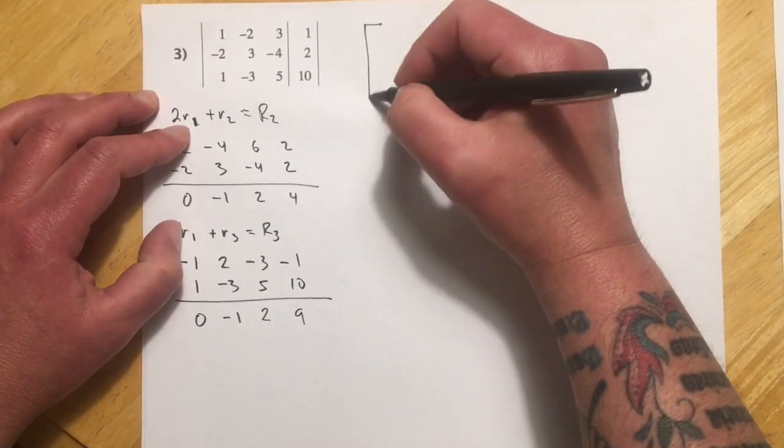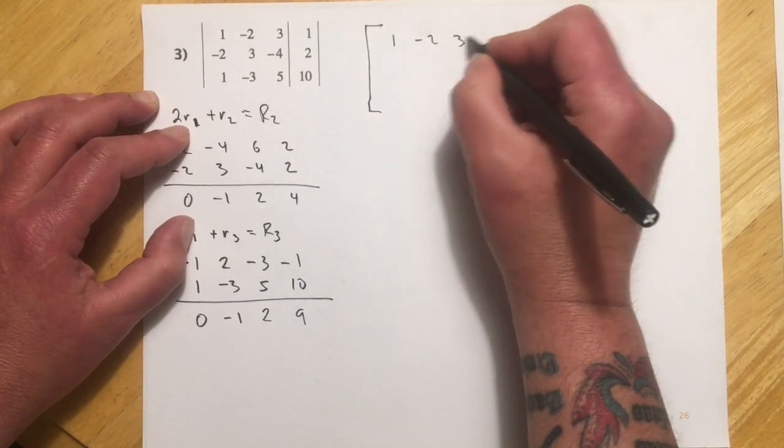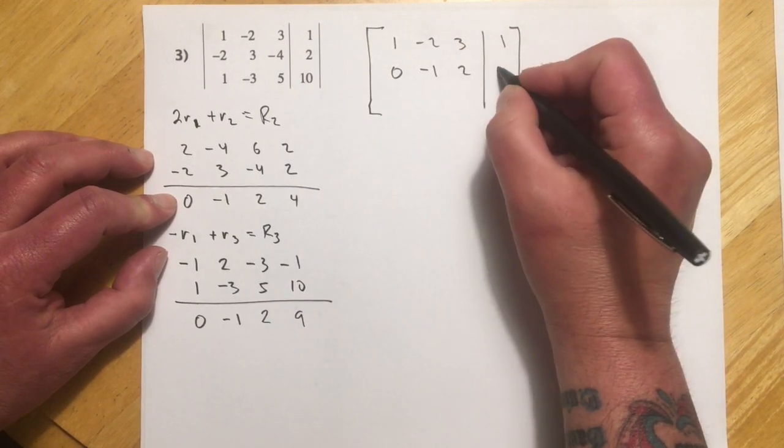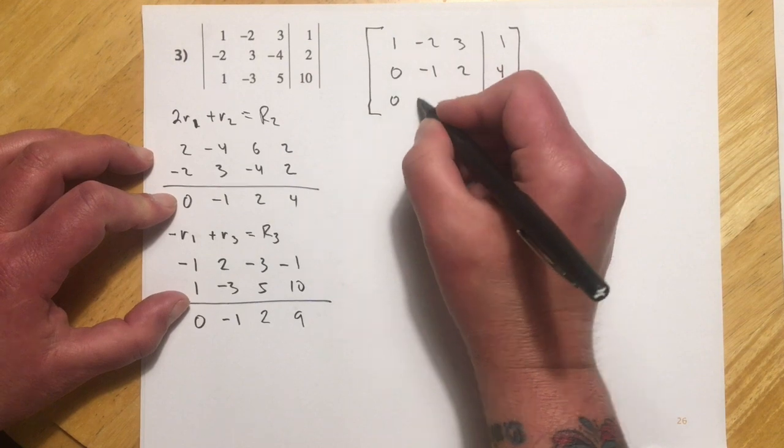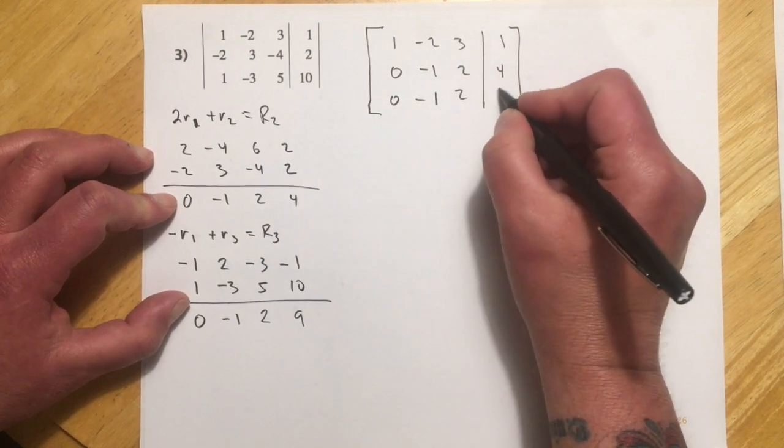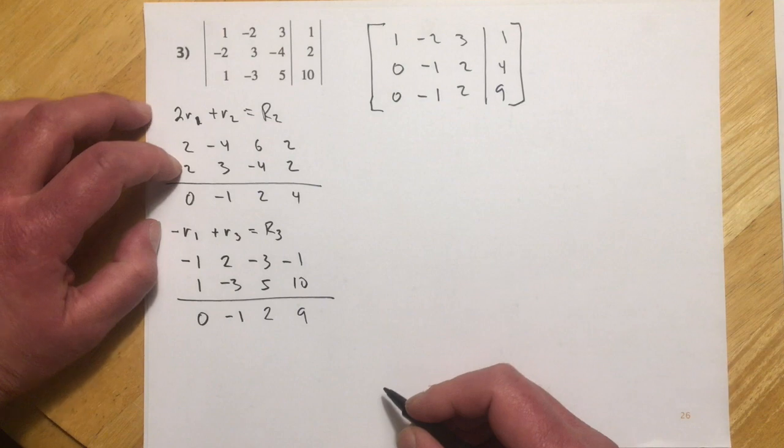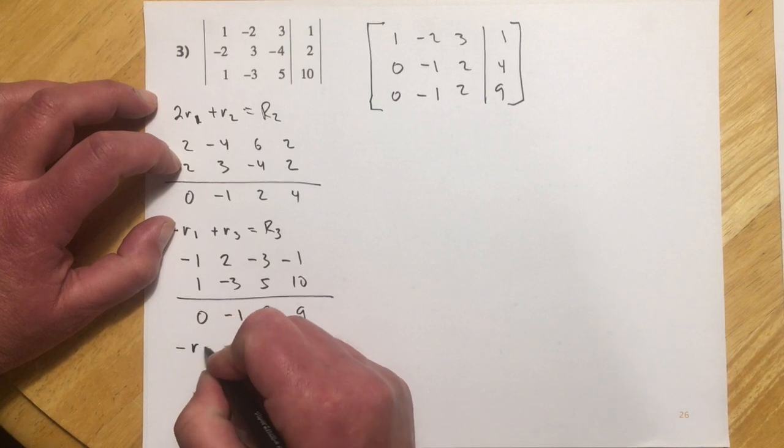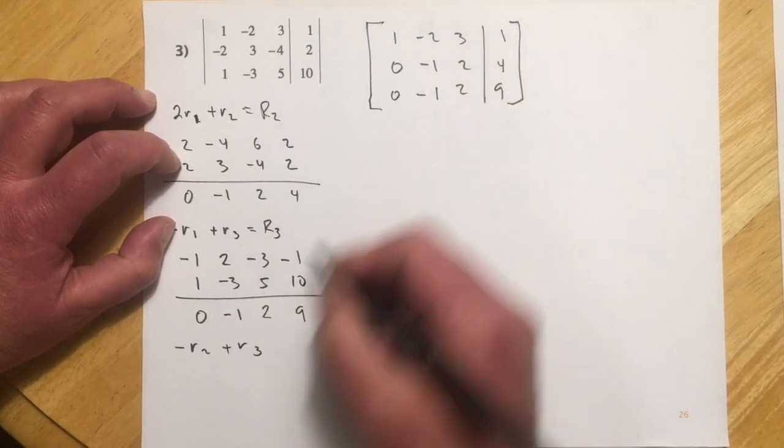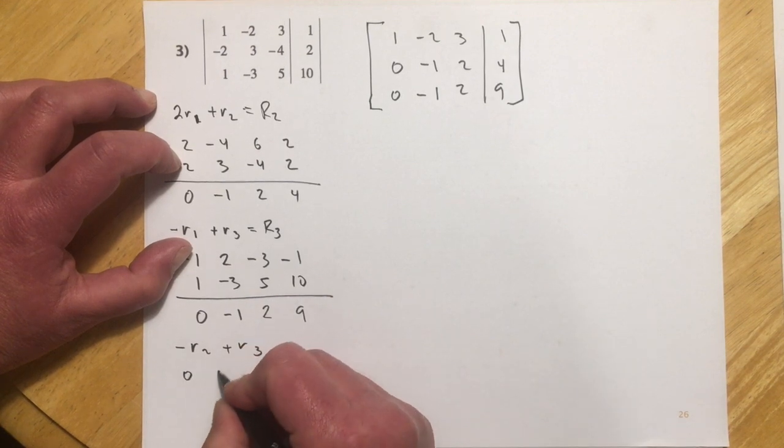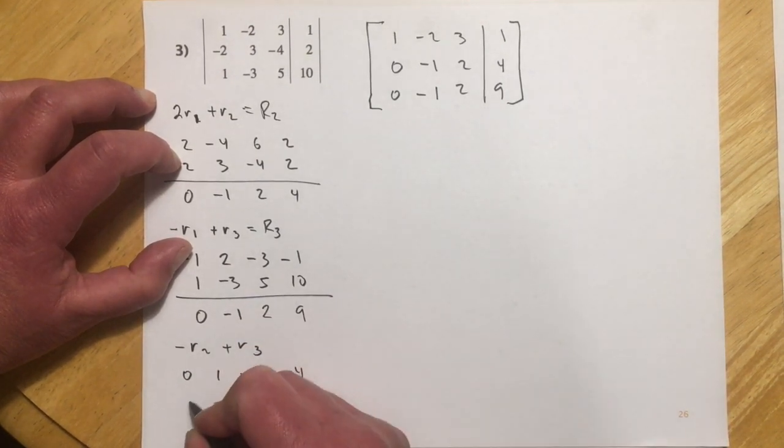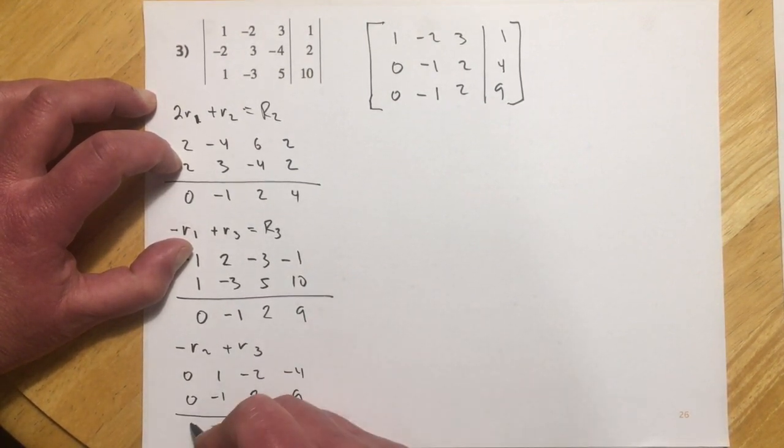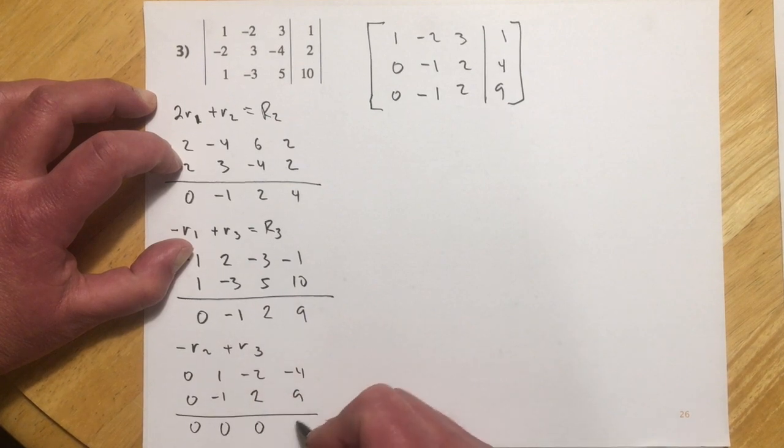And then you can kind of see what's going to happen here. These are coming out the same. So if I do negative times row 2 plus row 3, these are going to drop out. So this will be 0, 1, negative 2, negative 4, and 0, negative 1, 2, and 9. So I end up with 0, 0, 0, and 5.